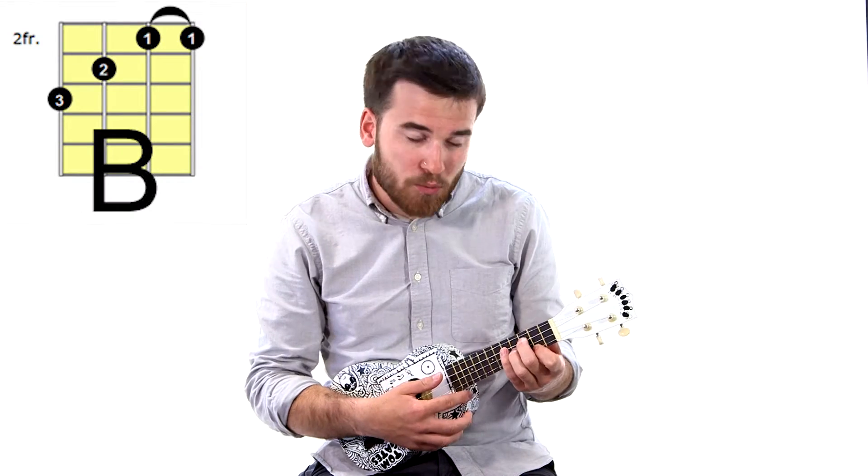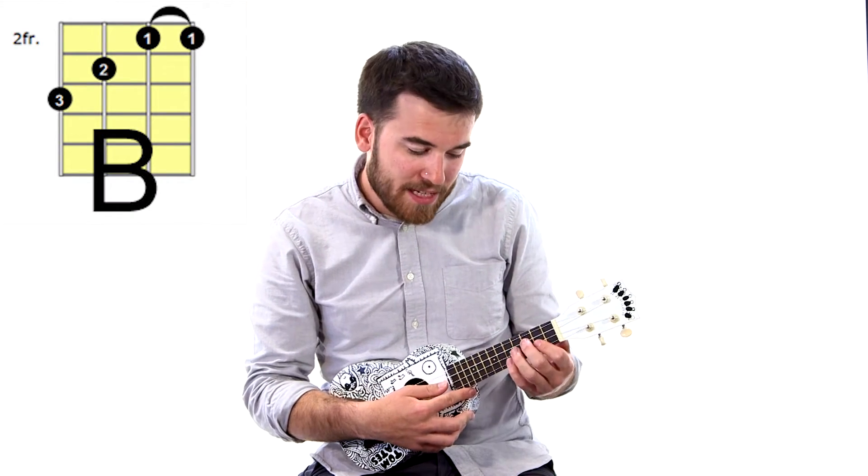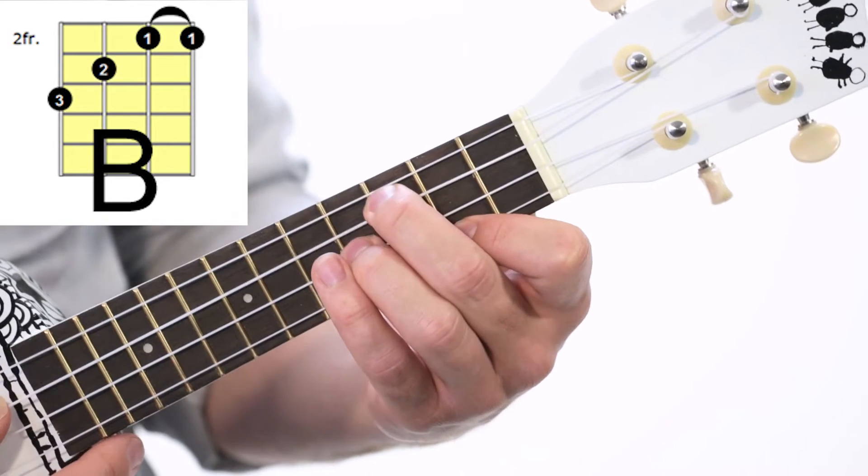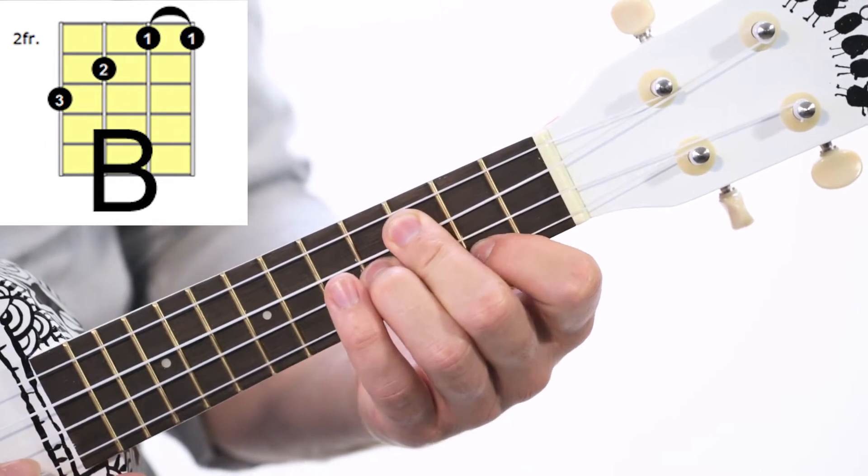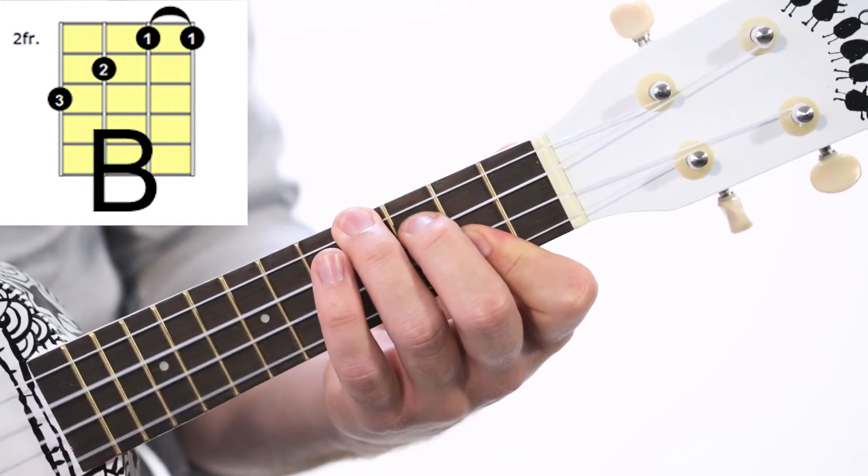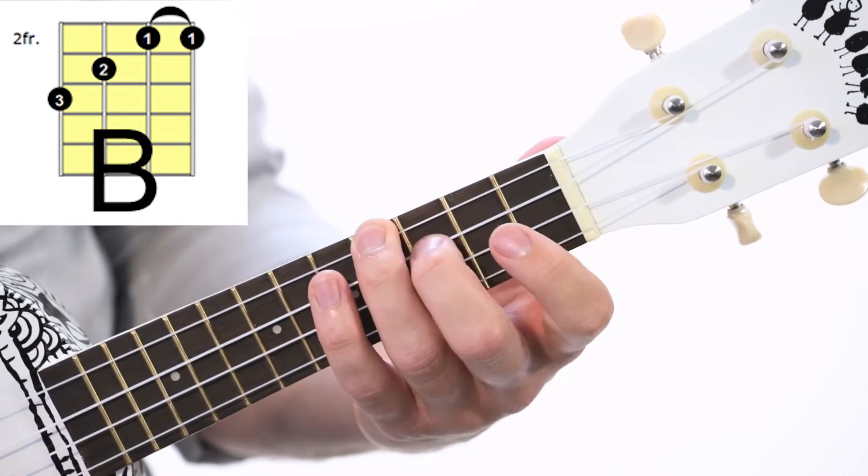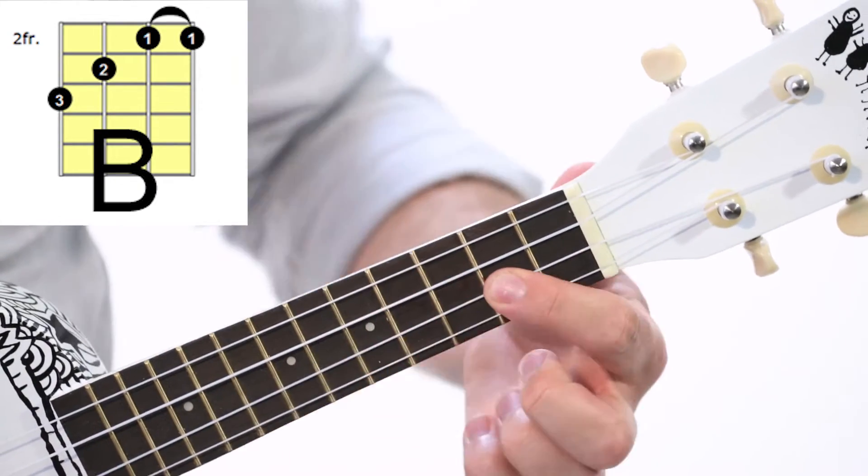Now the second chord we're going to be playing is a B. Now from G sharp to B it's actually quite a simple change. We're going G sharp to B. So for B it's third finger, second finger and then first finger.